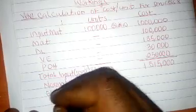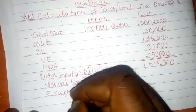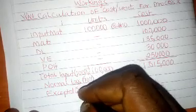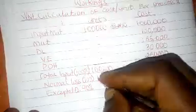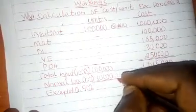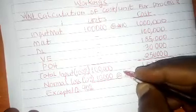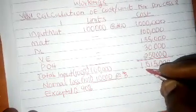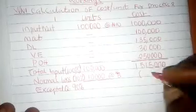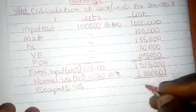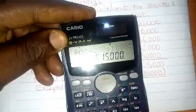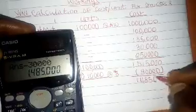So this is the expected normal output. What is 10% of the input? That is 10,000 units. It is sold for 3 Naira — it is going to reduce our cost of production, and that is 30,000 Naira. So we subtract 30,000 Naira, and that will give you 1,485,000.